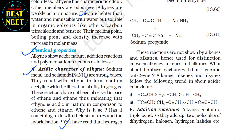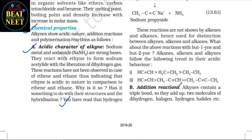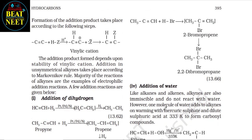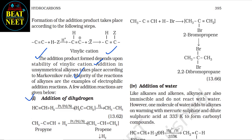What about the reaction with but-1-yne and but-2-yne? The acidic behavior trend is: terminal alkynes > internal alkynes. (b) Addition reactions: alkynes contain a triple bond, so they add two molecules of dihydrogen, halogen, hydrogen halides, etc. The addition product depends on the stability of the vinyl cation; addition in non-symmetrical alkynes takes place according to the Markovnikov rule. Most reactions of alkynes are examples of electrophilic addition reactions. First — addition of dihydrogen: see this reaction.